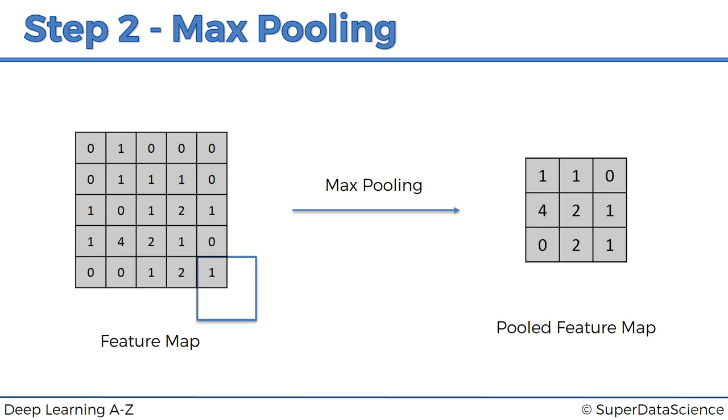And in addition to all of that, we are reducing the size. So there's another benefit. We're preserving the features, we're introducing spatial invariance, we're reducing the size by 75%, which is huge, which is really going to help us in terms of processing. And moreover, another benefit of pooling is we're reducing the number of parameters. So we're reducing, by 75%, the number of parameters that are going to go into our final layers of the neural network. And therefore, we're preventing overfitting.